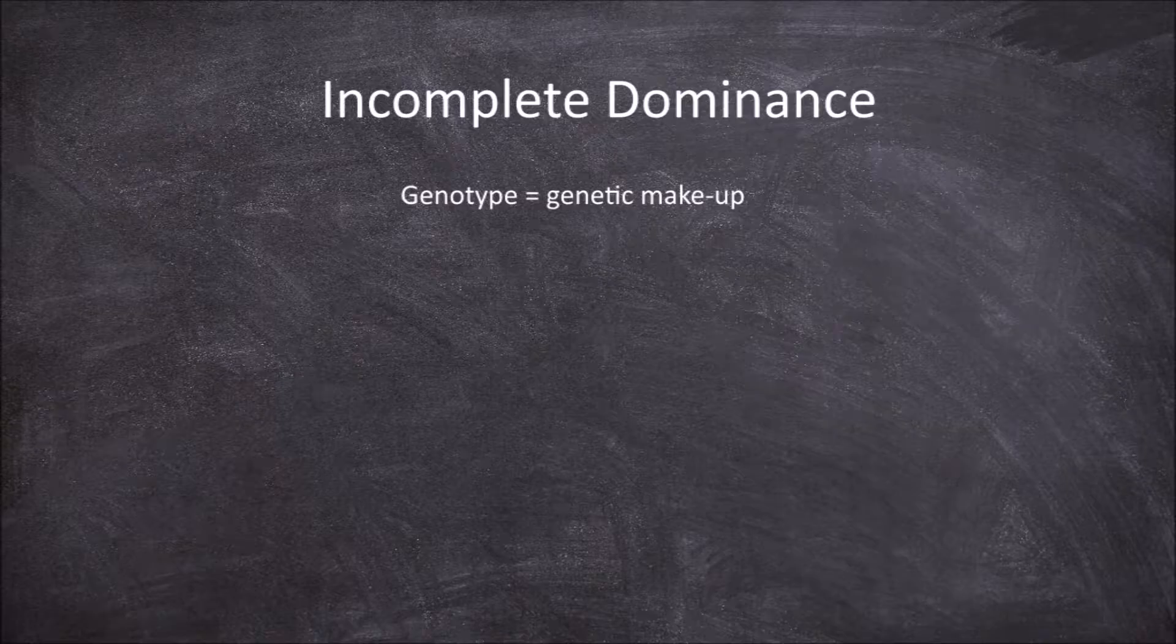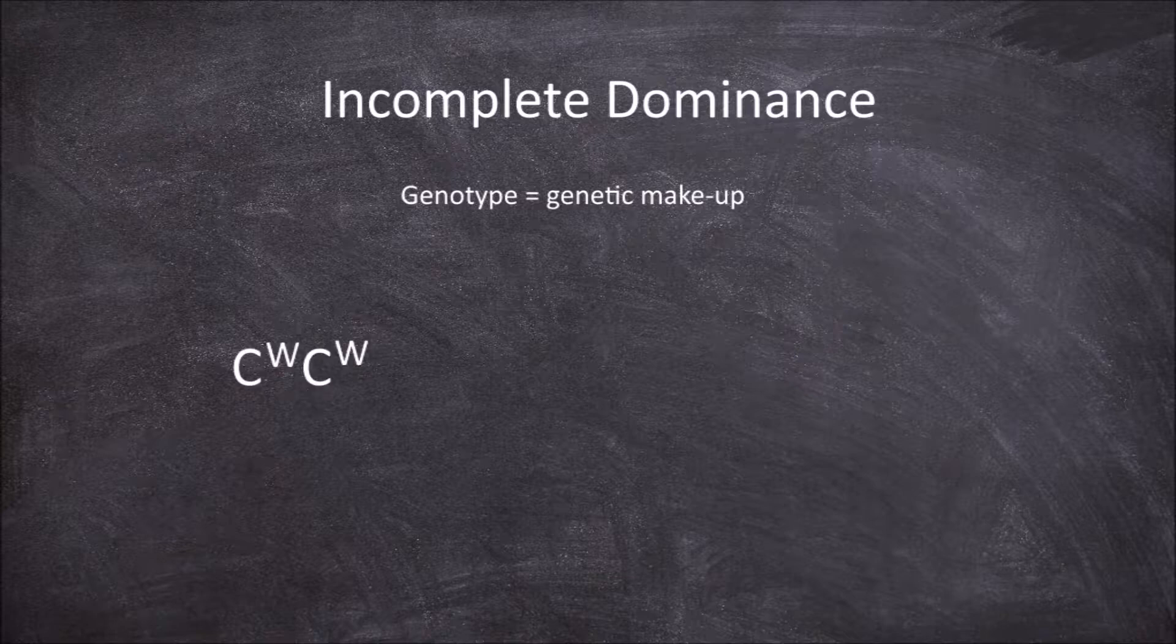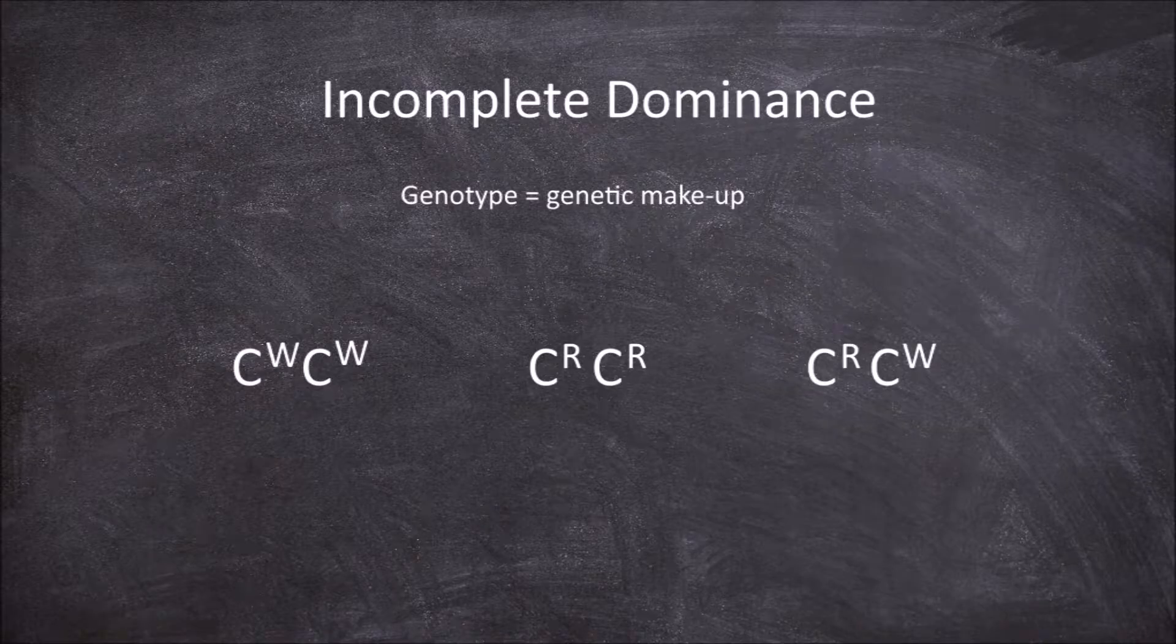Genotype refers to the genetic makeup, in other words the specific genes or alleles an individual has. There are three potential genotypes a plant may have for this trait: C^W C^W, C^R C^R, and C^R C^W.